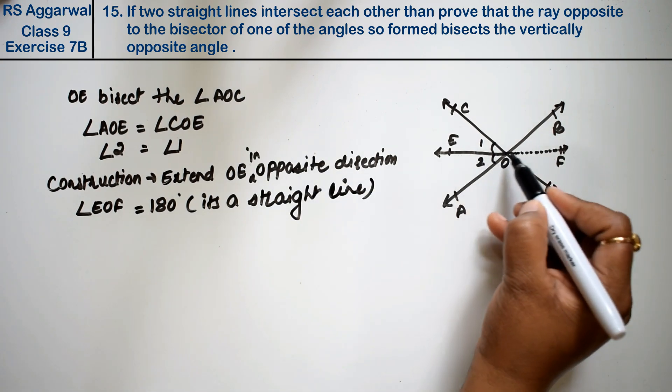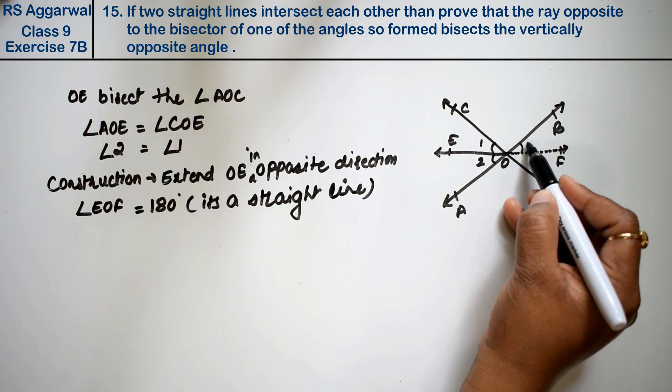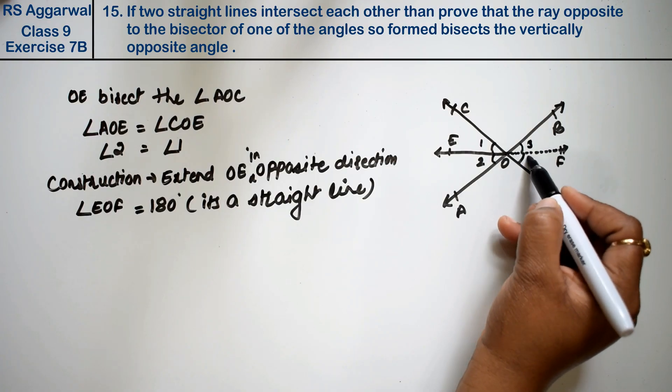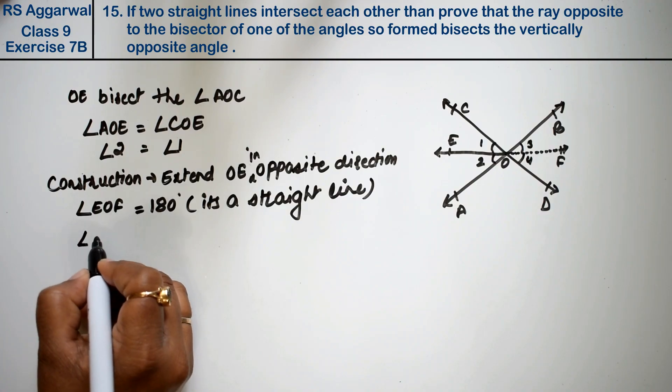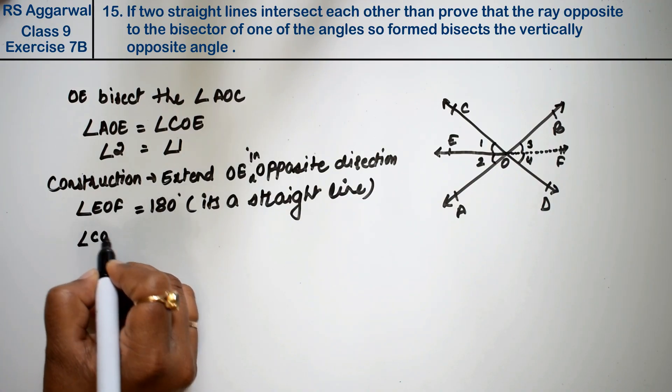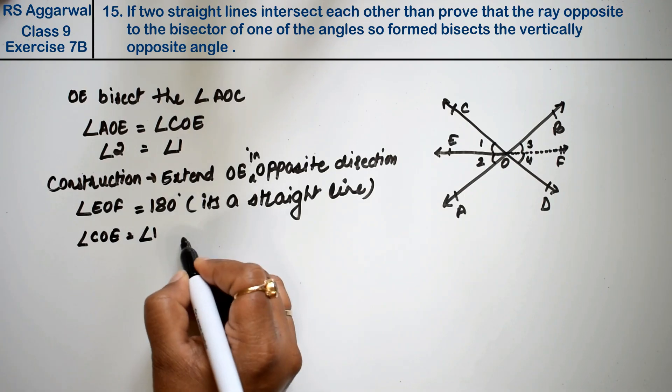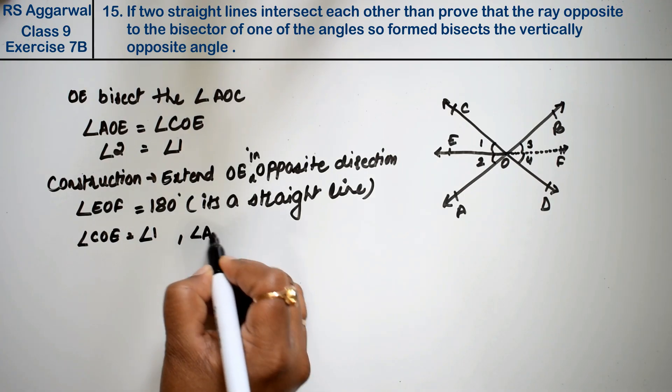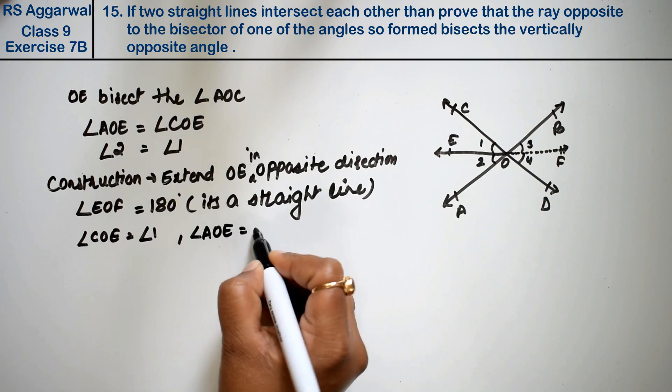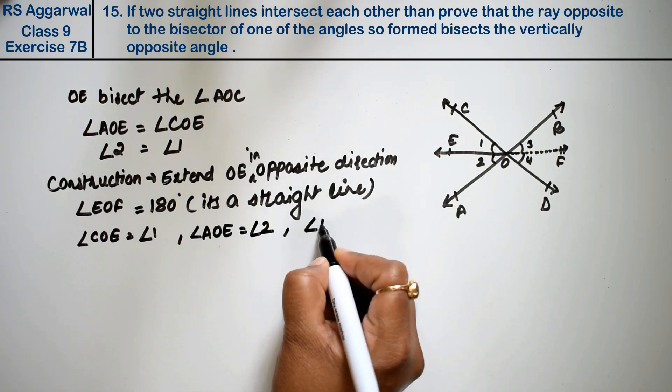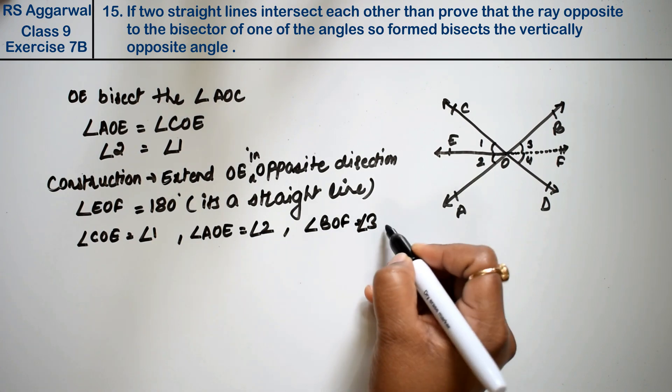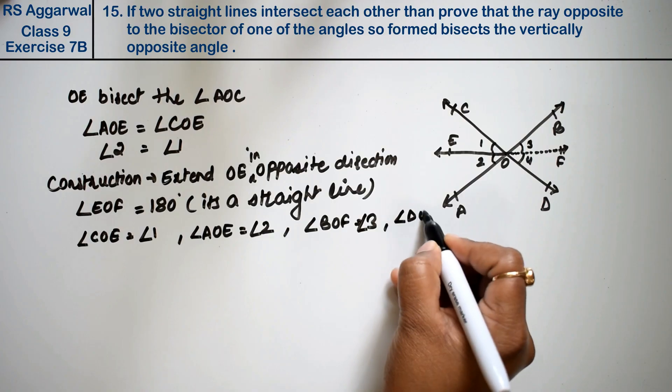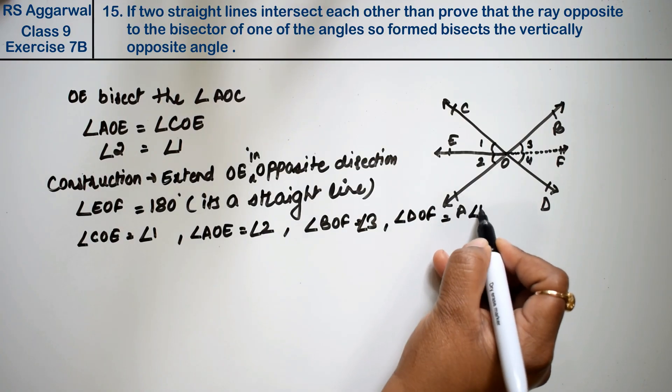Now, when this is a straight line, then this angle is - we'll call this angle 3, and this angle is 4. Now see, angle COE is our angle 1. Now, angle AOE is our angle 2, and angle BOF is our angle 3.